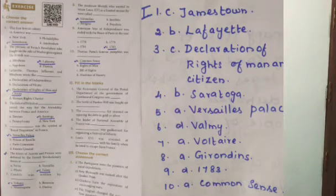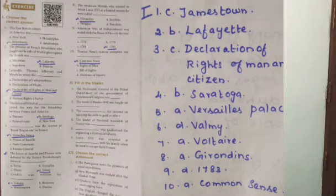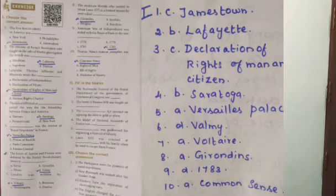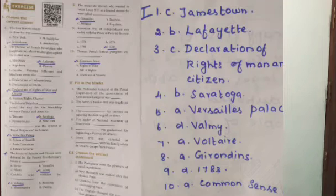Question 5: The Bastille was the symbol of royal despotism in France. Answer B — Versailles Palace. Question 6: The forces of Austria-Prussia were defeated by the French revolutionary forces at Valmy. D is the correct answer. Question 7: Candide was written by Answer A — Voltaire.